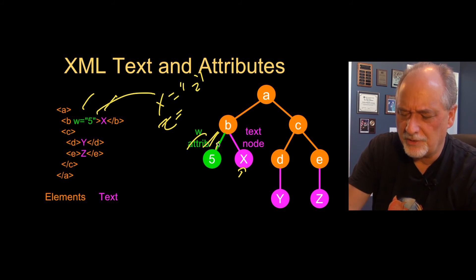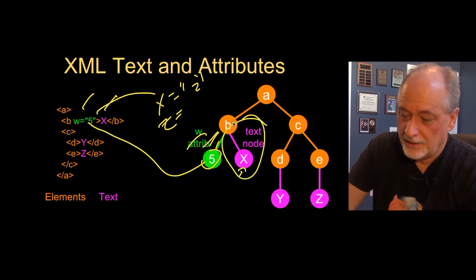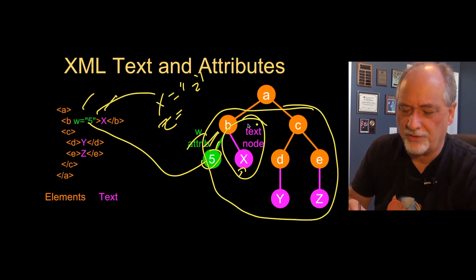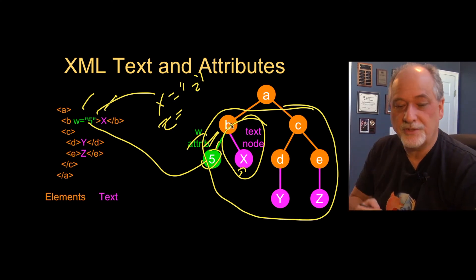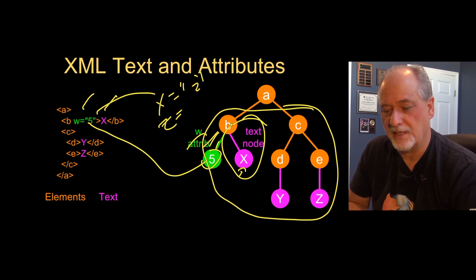The w attribute has a value of five, and that's the five down there, so you could have multiple ones. You can only have one text node. Now, in the case of A, you have a whole bunch of text nodes, but these are because there are child nodes. Within one simple node, you can only have one text element.